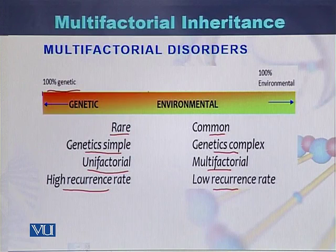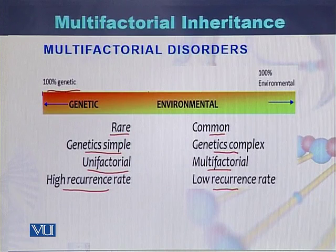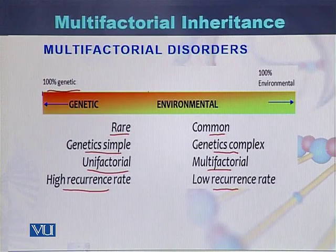So on one hand there are diseases which are one hundred percent genetic, and on the other hand are those which are one hundred percent environmental. Multifactorial diseases fall in between, where there is some role of genes and some role of the environment — a joint venture between both environment and genetics.